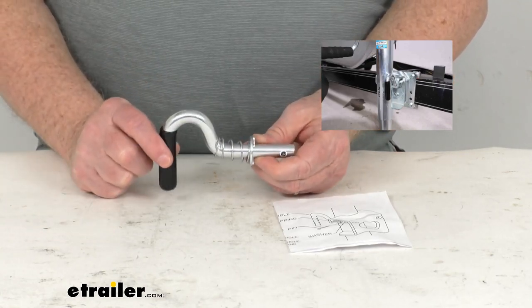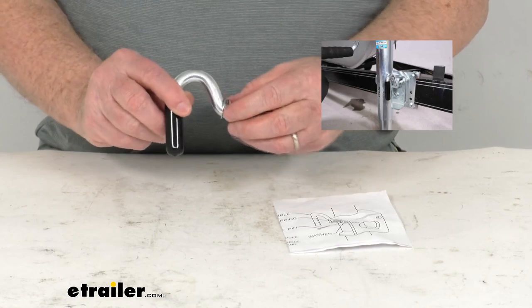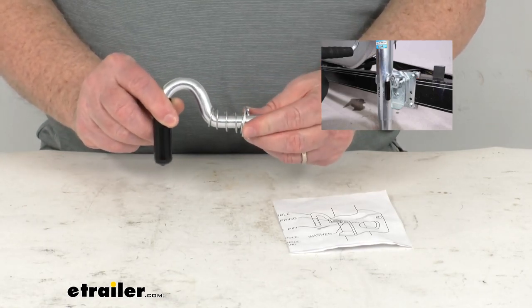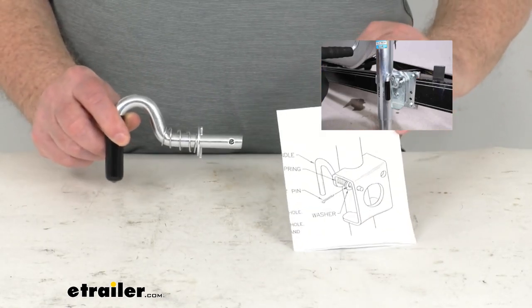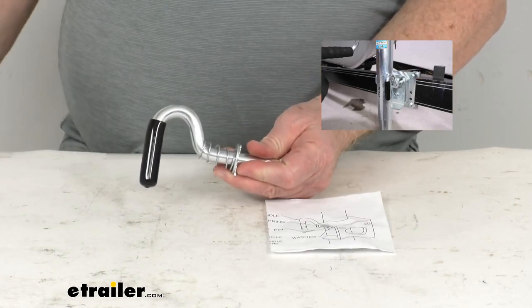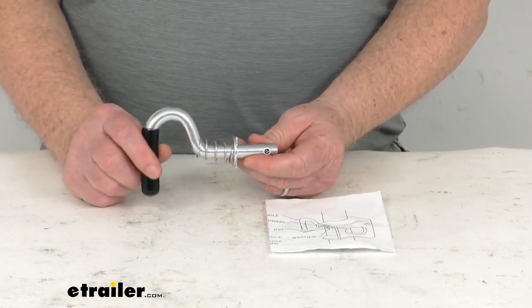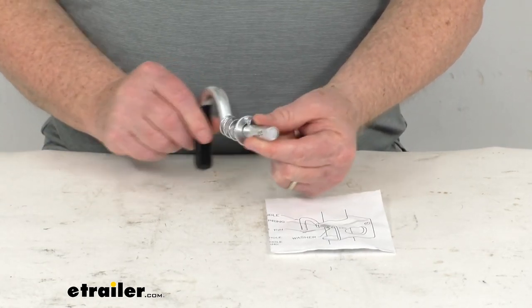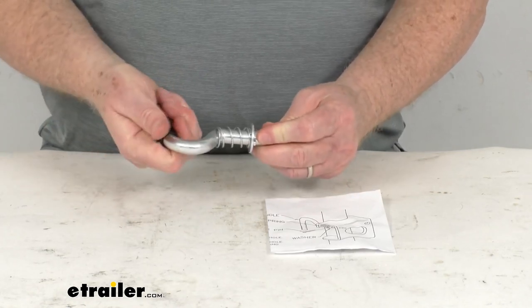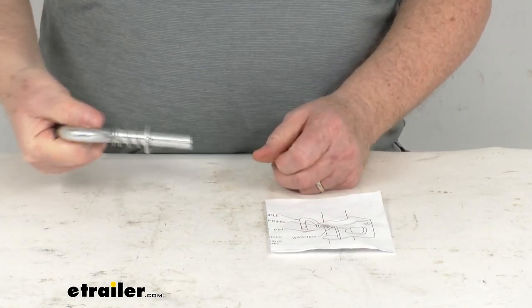This is an exact replacement for the damaged pull pin. It includes all the springs, washer, and pin that you need to install it. It does come with a nice set of instructions. It is for a quantity of one swivel pin kit, and the diameter on this pin is a half an inch. You can see it has the black handle on it used to pull it out.